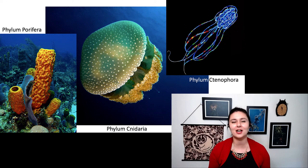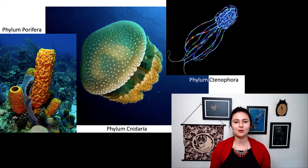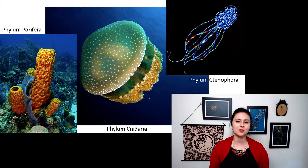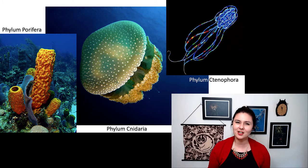So here we have phylum porifera or sponges. Phylum cnidaria are jellyfish. And phylum ctenophora, these are our comb jellies. So even though they might look like jellyfish to you, they're actually an entirely different phyla and are pretty awesome in a different way.